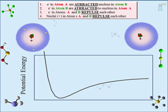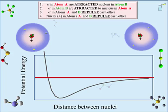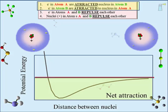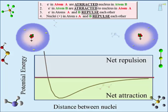We will bring atoms A and B and create a graph showing the relationship between the sum of attraction and repulsion forces as a function of the distance between the two atoms. The y-axis will be the energy axis, referring to the summed attraction-repulsion energy as a potential energy, much like a compressed spring has potential energy. The red line indicates where total attraction energy equals total repulsion energy. The x-axis is the distance between the nuclei of atoms A and B. Below the red line are distances where there is a net attraction; above the red line is where there is a net repulsion.